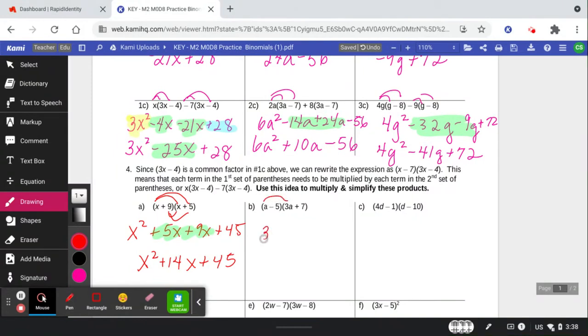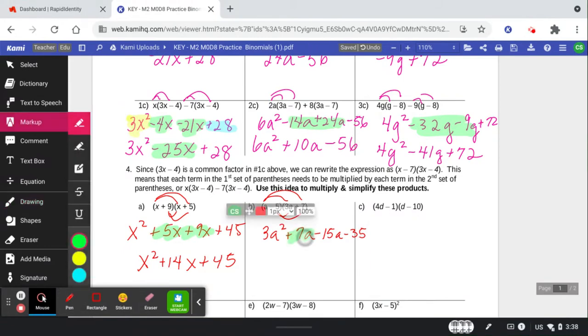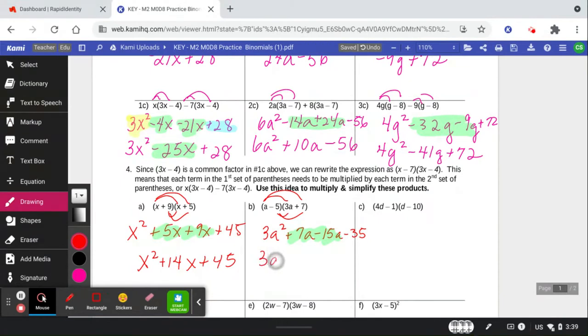A times 3a. 7 times a. Negative 15a. Minus 35. Combine those middle terms. We get negative 8a's. Why is it negative 8? Negative 15 plus 7. We're subtracting and keeping the sign of the larger. Pause the video. Try the next one. Let's see how you did.